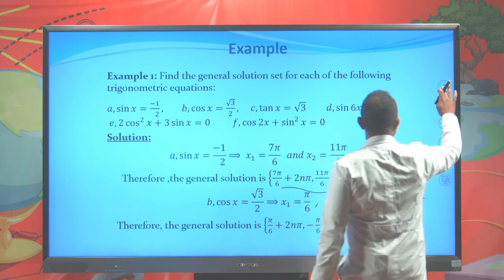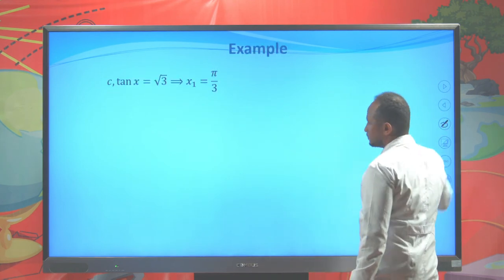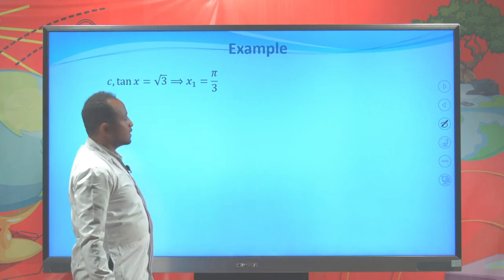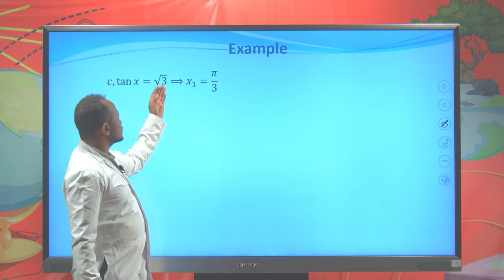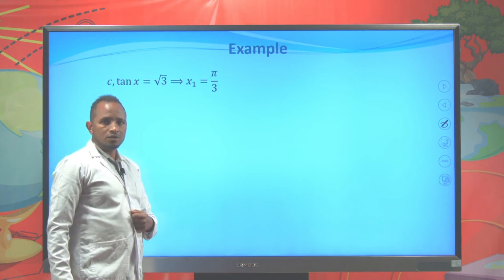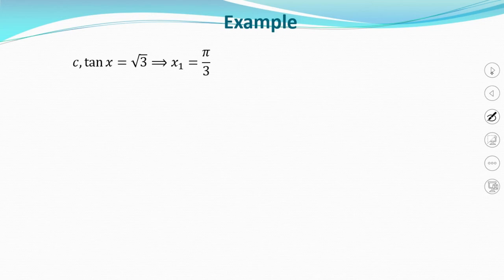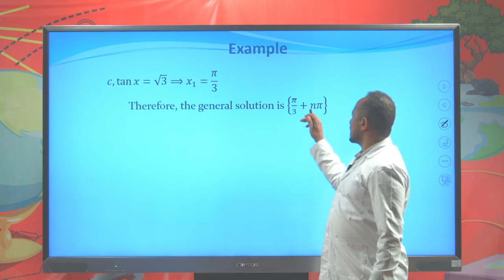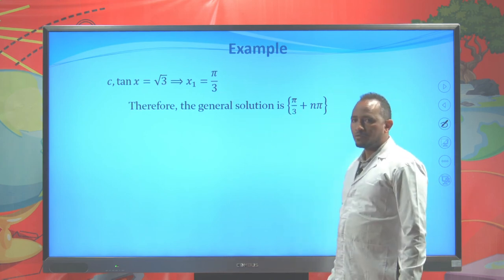Example c: tan(x) = √3. tan⁻¹(√3) = π/3 (60°). Since we have one particular solution from (−π/2, π/2) and tan has period π, the general solution is π/3 + nπ.